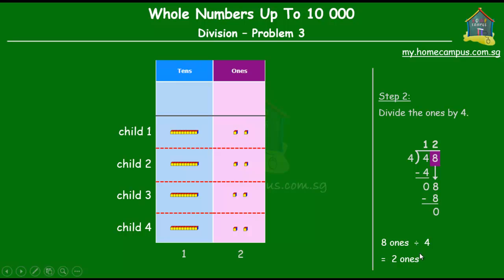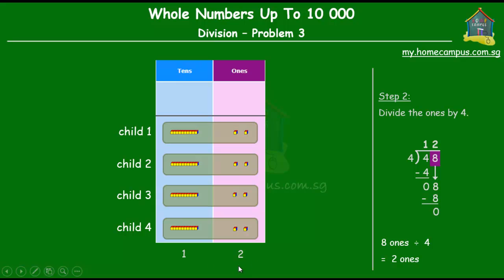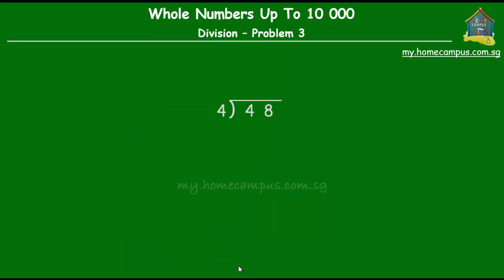So 8 ones divided by 4 is equal to 2 ones. And the result of 48 divided by 4 is 12. So each child gets 1 ten and 2 ones or 12 muffins. All right. Let's summarize the steps one more time.